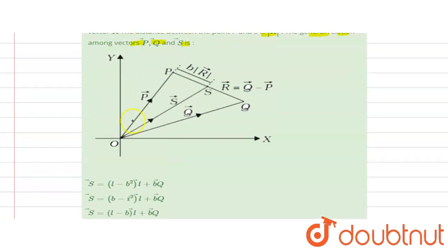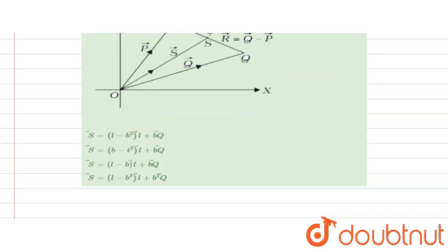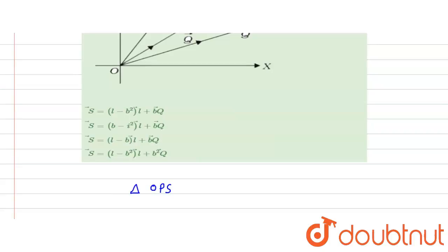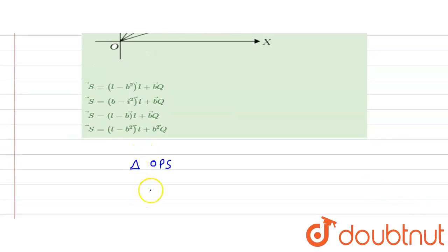Firstly, we take triangle OPS. From the vector triangle law applied to triangle OPS, we can write: vector OP plus vector PS plus vector SO equals zero.